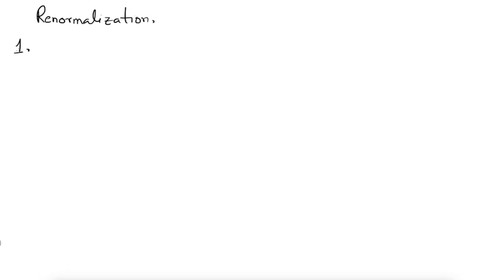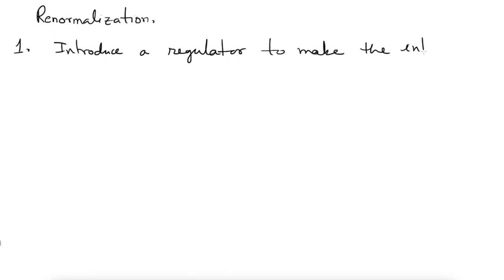There are two steps involved. Step number one is to introduce a regulator whose job is to make the integrals finite. You introduce a regulator, and then the integral depends on that regulator — it becomes a function of the regulator. The purpose is to make the integral finite in the ultraviolet. But of course if you remove the regulator, it becomes divergent again. This procedure is called regularization.